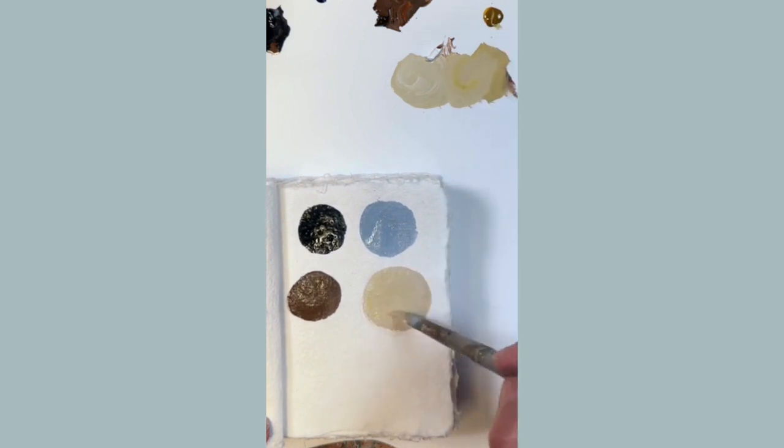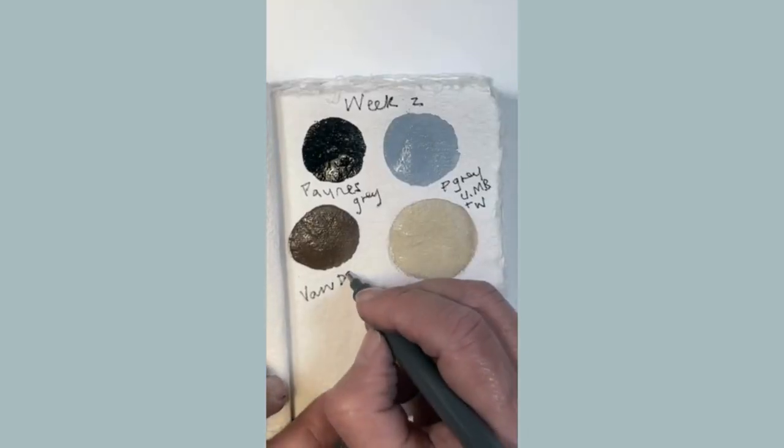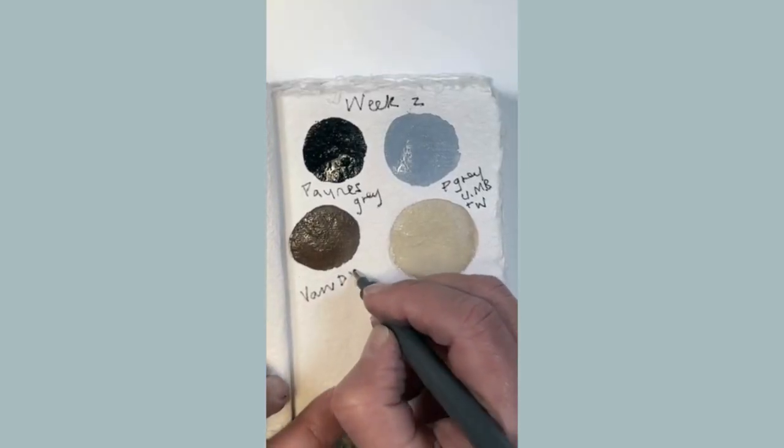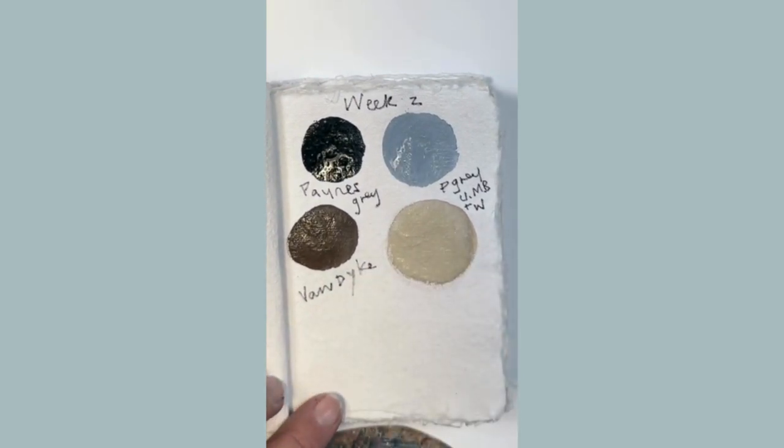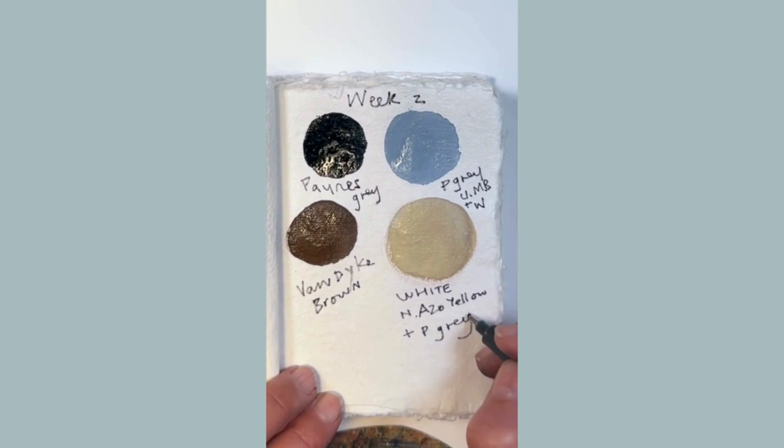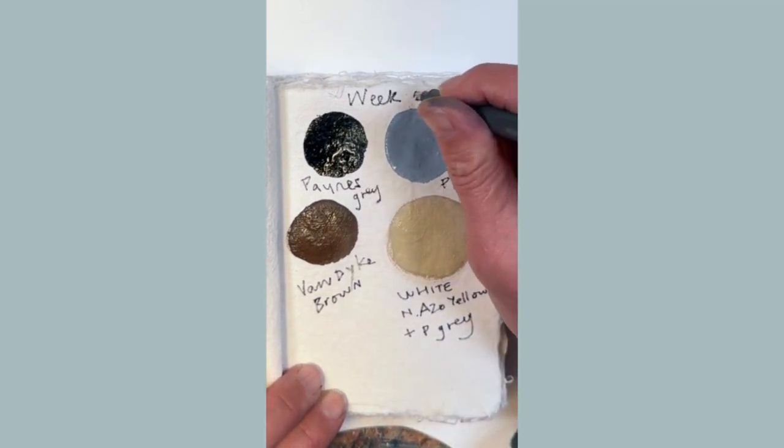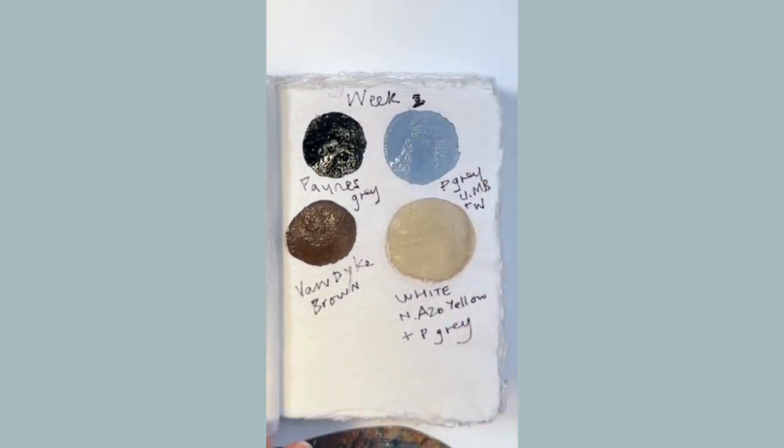Adding a little bit of yellow and it's playing around exploring what the colors do. So that's Van Dyke brown. At the top Payne's gray, Payne's gray ultramarine and white to get the elephant color. That is for week two.